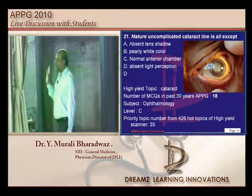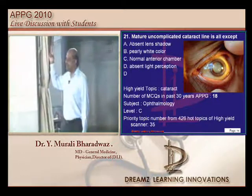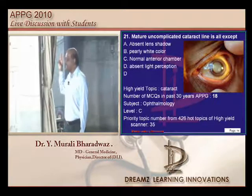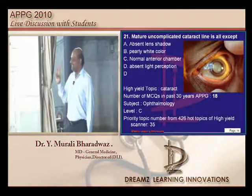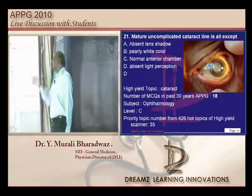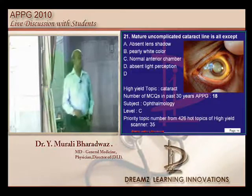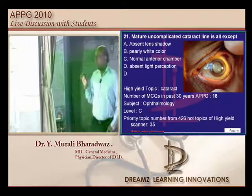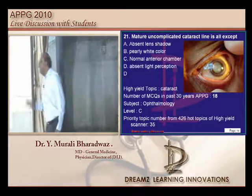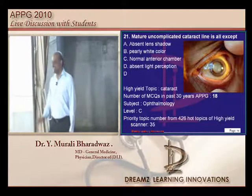What are the two most important topics in ophthalmology that help pass the exam? Glaucoma and cataract — without them there will be no paper. There are two questions on cataract. Mature uncomplicated cataract — what do you find? This is a very tricky question and there is a great chance of getting it wrong.